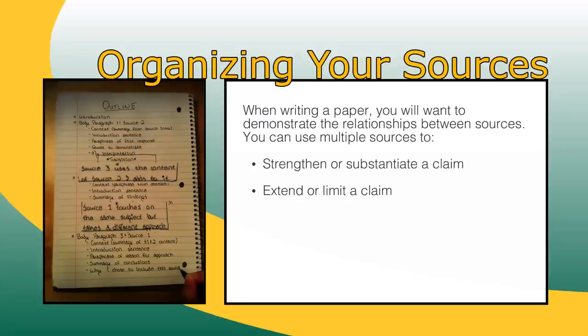It might also extend or limit a claim by describing the instances in which it does or does not apply. Two sources may have very different ways of making inferences, and one may demonstrate or dispute causal or developmental relationships that have been inferred by the other.